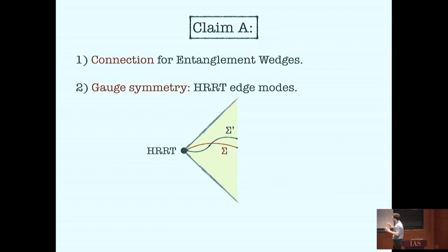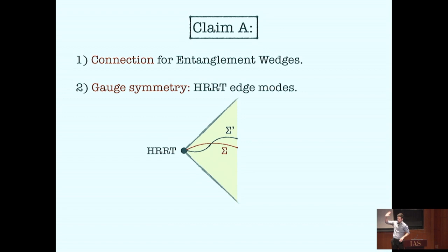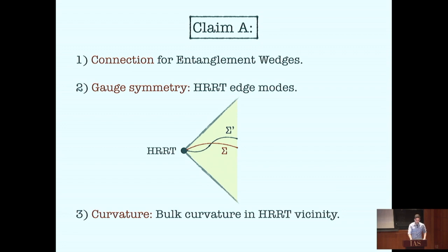The action of most diffeomorphisms is trivial because the charges — the generators — vanish on the physical phase space as a result of the constraint equations. But there are some diffeomorphisms that, from the perspective of the sub-region, look non-trivial: those that don't fall off fast enough as we approach the boundaries — the asymptotic ADS boundary and the RT surface. The diffeomorphisms that become the gauge symmetries in the space of wedges are those with non-trivial profile on the RT surface. These have been called the edge modes.